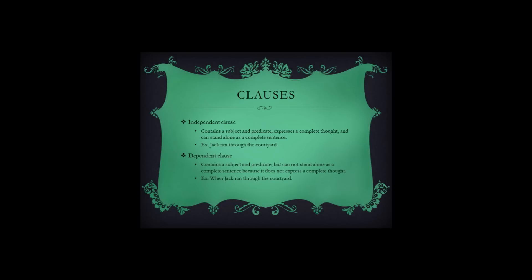Clauses. There are two types of clauses: independent clauses and dependent clauses. An independent clause contains a subject and a predicate, expresses a complete thought, and can stand alone as a complete sentence. For example, 'Jack ran through the courtyard' — Jack is the subject and ran is the predicate. A dependent clause contains a subject and a predicate, but cannot stand alone as a complete thought because it does not express a complete thought.